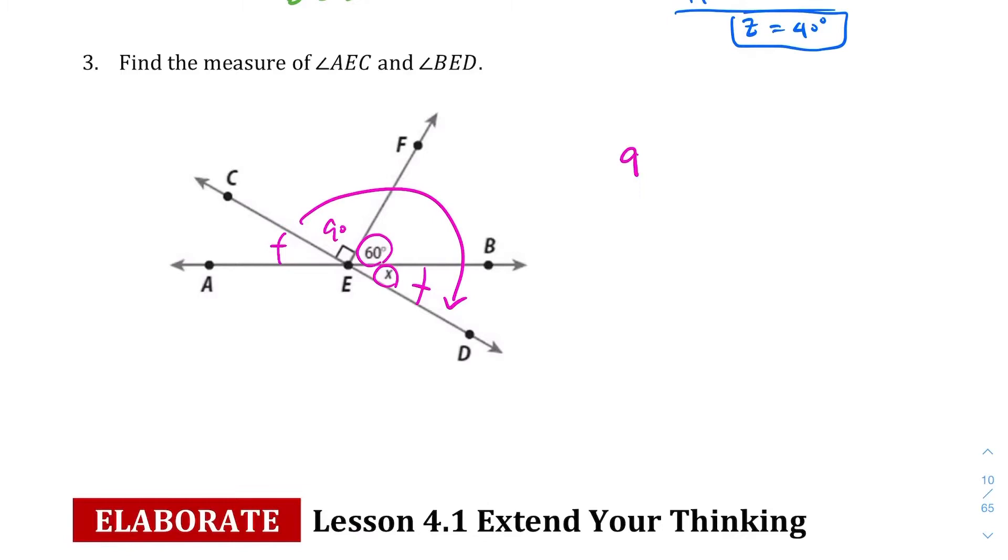90 + 60 + x equals 180. Let's combine the like terms. 150 + x equals 180. Subtract 150 from both sides. We end up with x equals 30. That's it. If x equals 30, so what we can say is angle AEC and angle BED are equal to 30 degrees.